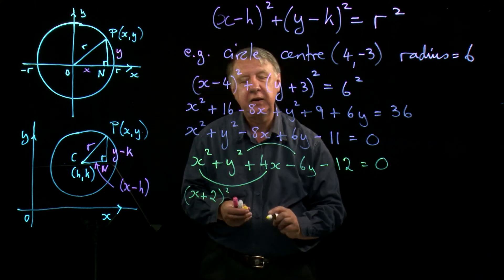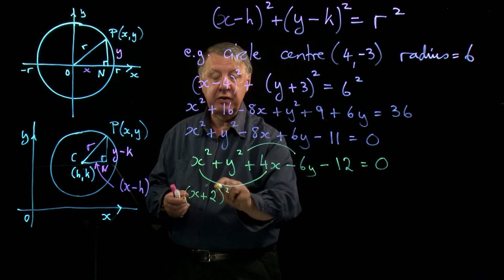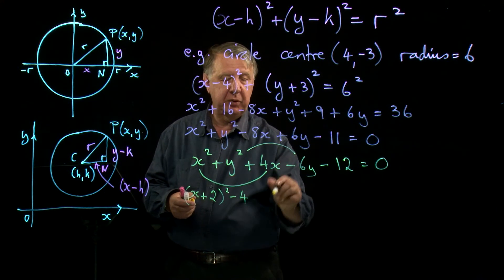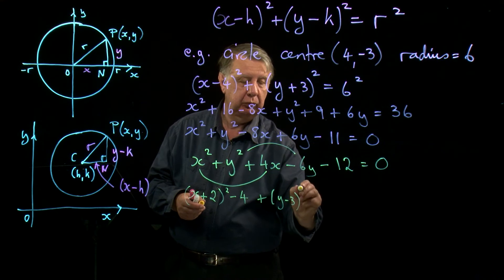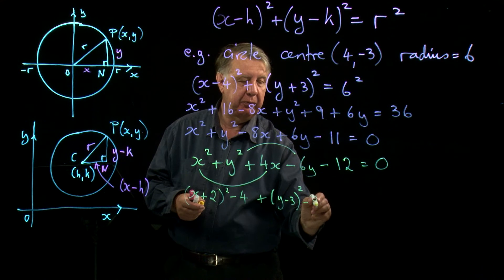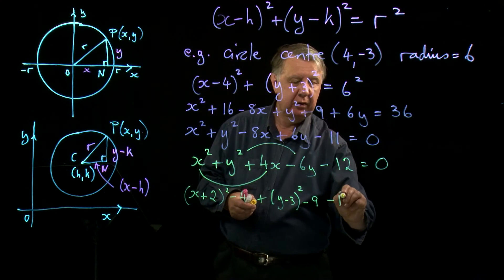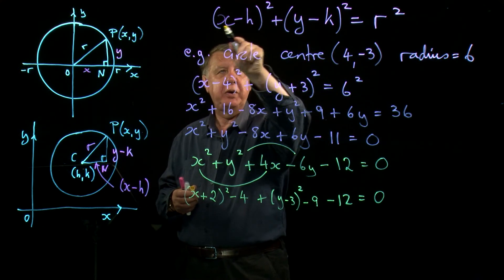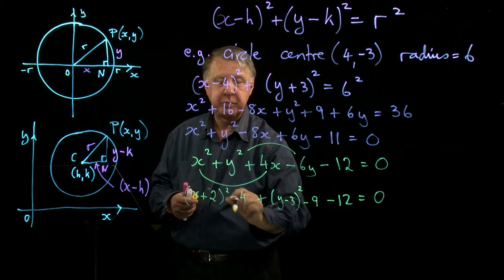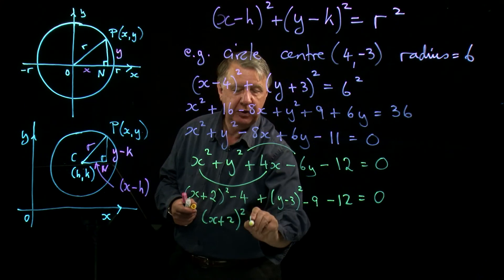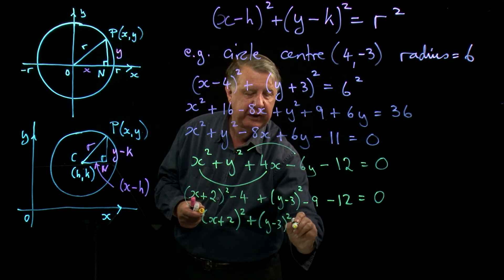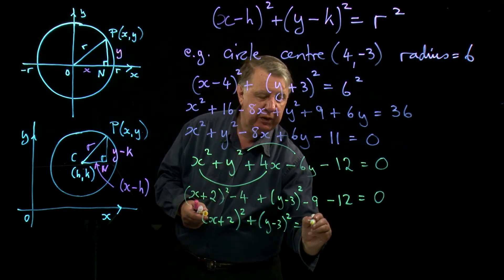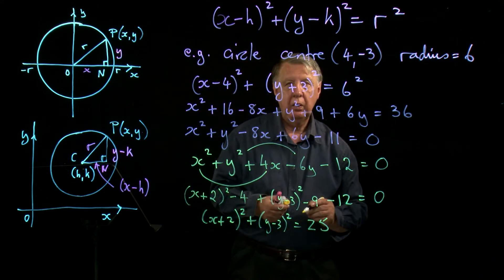So X squared plus 4X is X plus 2 all squared. Remember the completing the square technique? You halve this number and then you square it and take it away again, so that gives us 4. And then the Y part, halve that number, negative 3, square it and take it away again. And then finally, take 12.